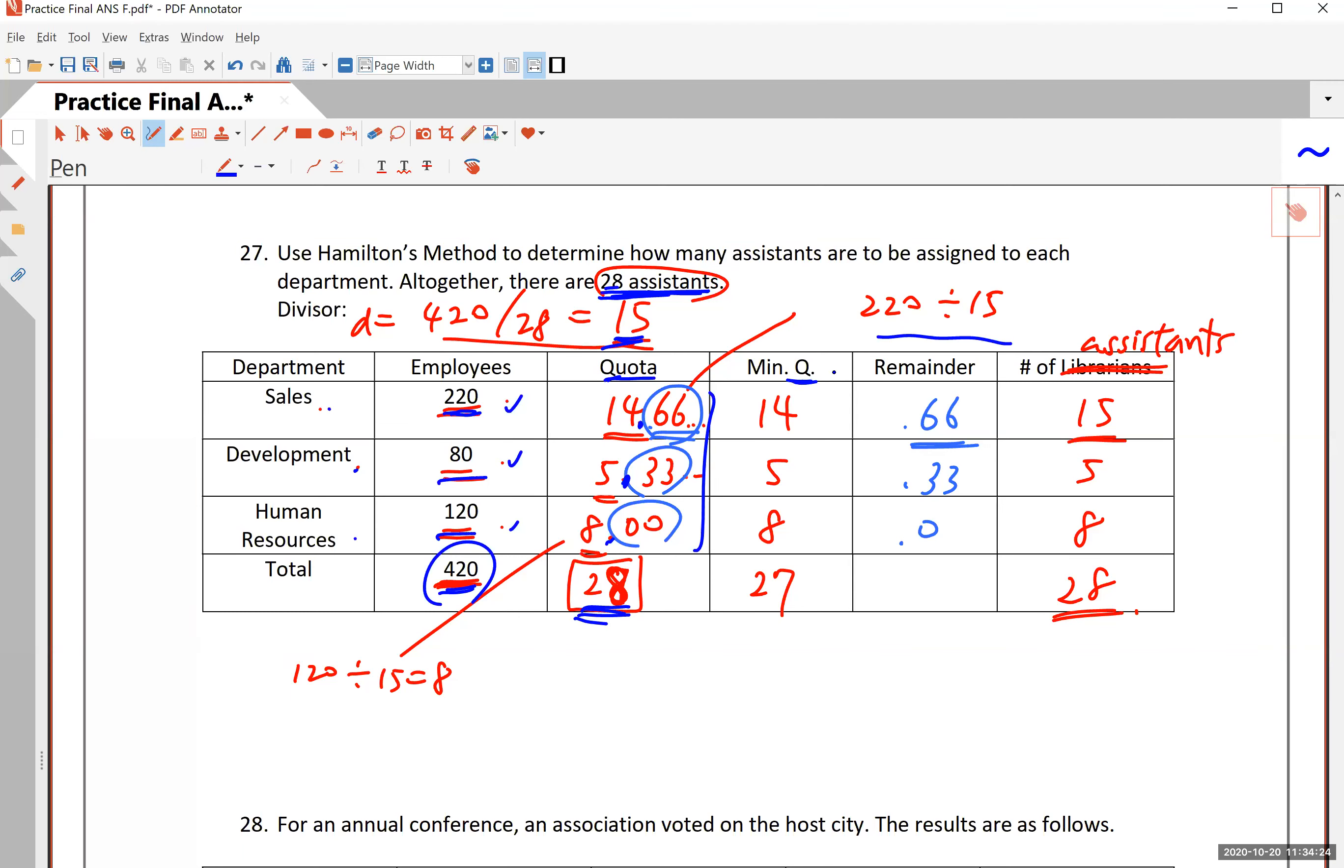Now the minimum quota, remember for Hamilton's method, you basically get the minimum quota, truncate everything after the decimal number. So it's 14, 5 and 8. These add up to 27. So you need one more assistant to be assigned. Which one gets this lucky last assistant? Well, the decimal portion is 66, 33, and 0. So according to Hamilton's method, that extra assistant should be assigned to the department with largest remainder, which is sales. So sales will get 15 as opposed to 14. Add up these numbers, you get 28. That is the total number of assistants and you have solved the problem.